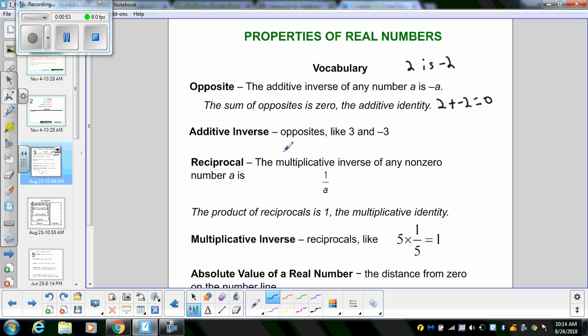Reciprocals, the multiplicative inverse of any non-zero number A is 1 over A. So for instance, if I have 2, the reciprocal would be 1 over 2. If you had a fraction such as 2 thirds, it would become 3 over 2.